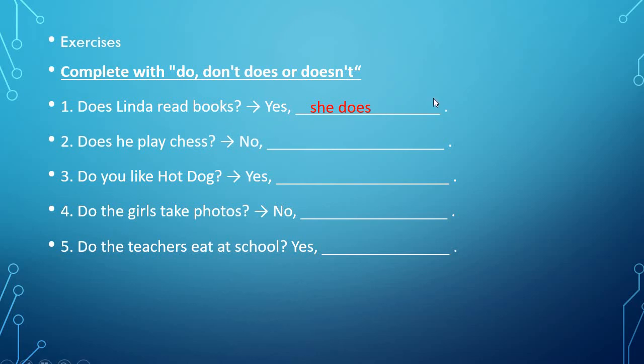Bien, does he play chess? Él juega ajedrez. Bien, aquí tenemos algo bien clarito. Pronombre he, auxiliar does, pero la respuesta es negativa. Entonces, ¿cómo colocaríamos acá? No he doesn't. No, él no.